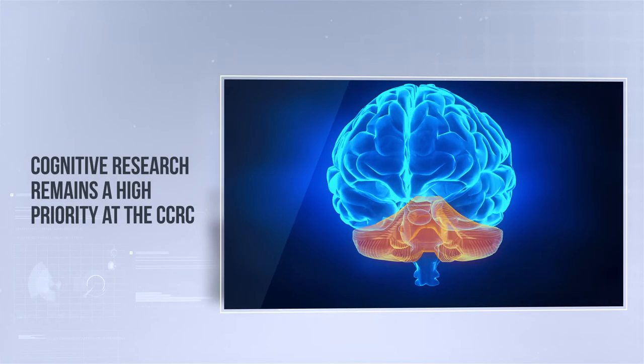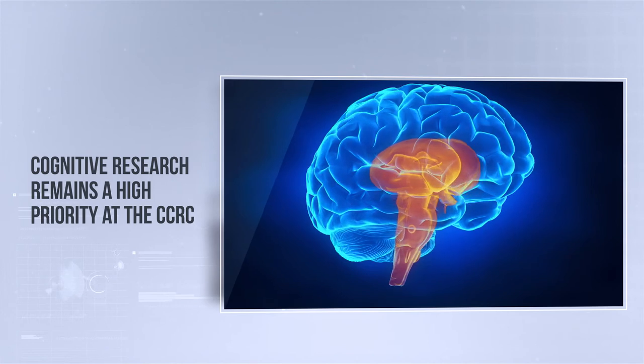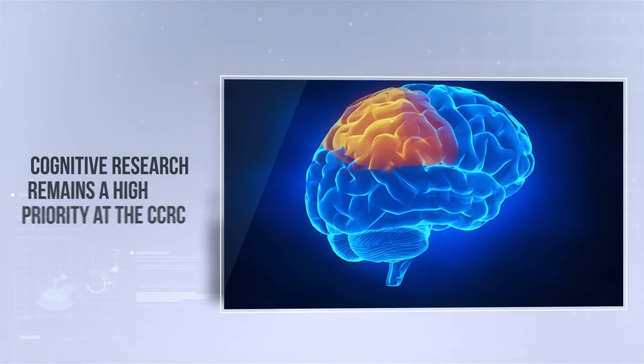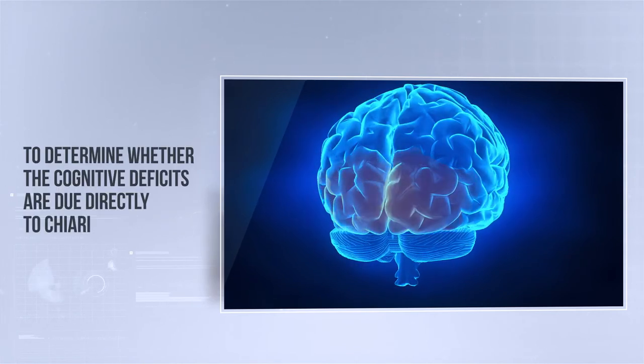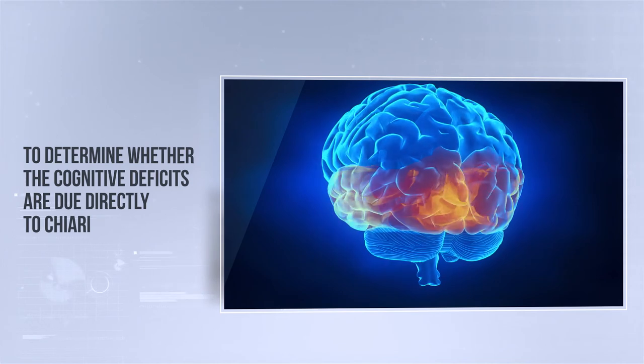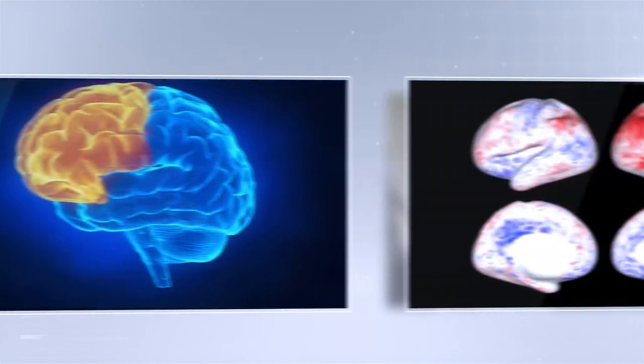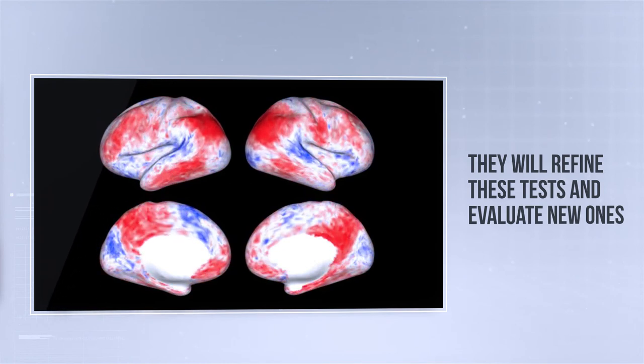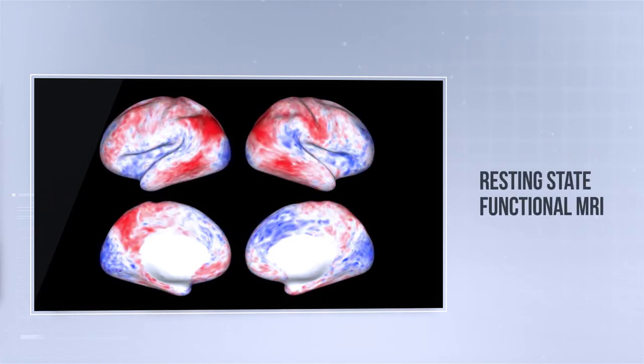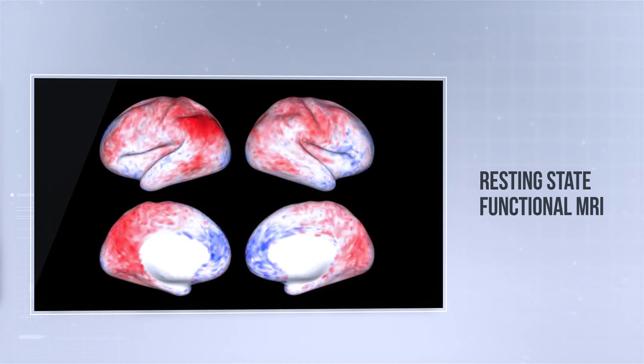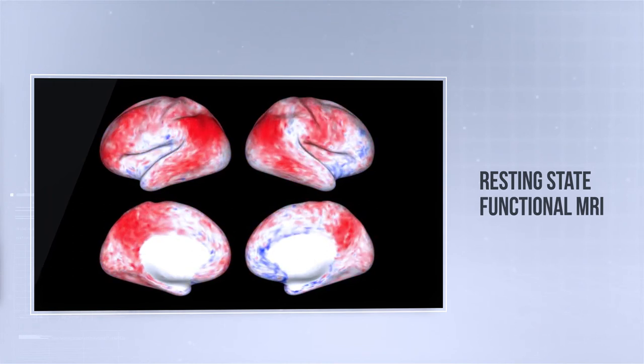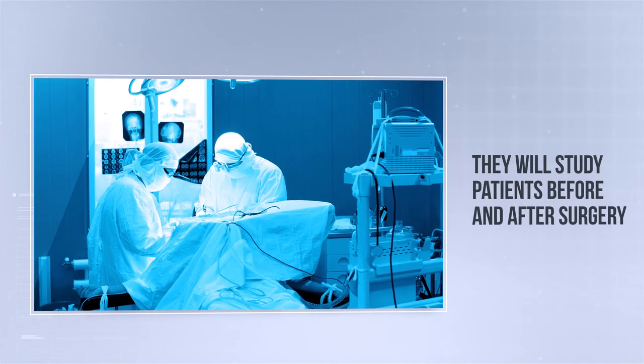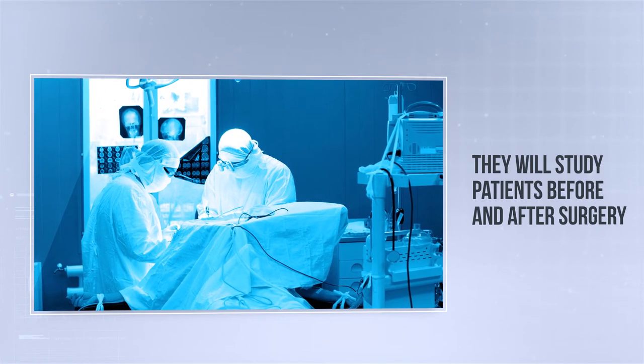Cognitive research remains a high priority at the CCRC. Researchers there will continue their work to determine whether the cognitive deficits are due directly to Chiari or are a secondary effect of chronic pain. They will refine these tests and evaluate new ones such as resting state functional MRI to determine if they can help in diagnosing Chiari. They will study patients before and after surgery to determine if cognitive function improves with surgery.